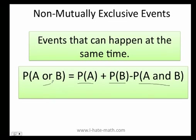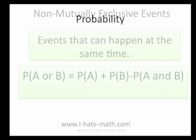The key word is going to be OR. You can see that both events can happen at the same time. That is why we need to subtract that overlapping area — because if not, we're going to be double counting the events. But we're going to do a lot of exercises so you can understand it.